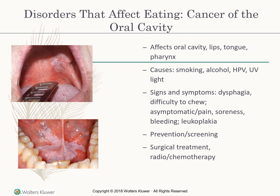Cancer of the oral cavity affects the lips, tongue, and pharynx. Causes include smoking, alcohol, HPV, and UV light. Signs and symptoms include dysphagia (difficulty chewing), and it could be asymptomatic. It can also include pain or soreness, bleeding, or leukoplakia, which is white patchiness. The patient could also have a red patch in the mouth that doesn't heal. Prevention includes HPV vaccination.